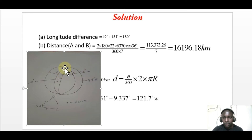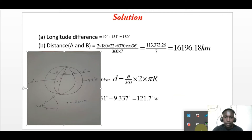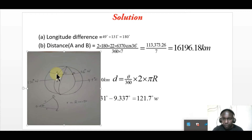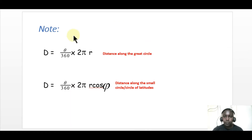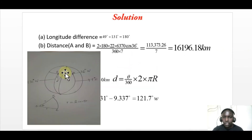The other town B is on longitude 131 degrees west. So you can see where A is and where B is. Therefore, to get the distance between A and B, we use the formula for distance along the small circle, since these two places are located along the circle of latitude.